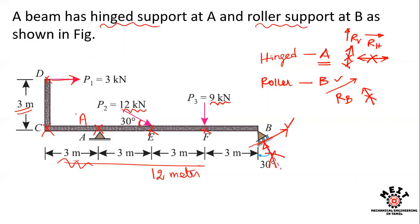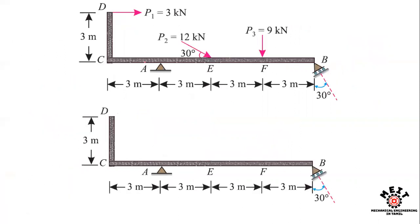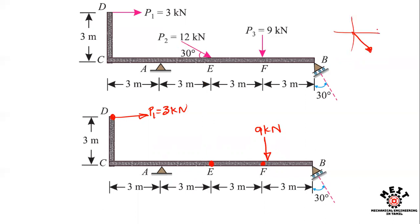To solve the unknown reactions, we convert all loads into force components. First, there is a horizontal force at point D — that is P1, with a value of 3 kN. The point F has a vertical load of 9 kN. Point E has an inclined load. To resolve the inclined load, it lies in the fourth quadrant, and we find its horizontal component and vertical component. The inclined angle is 30 degrees.